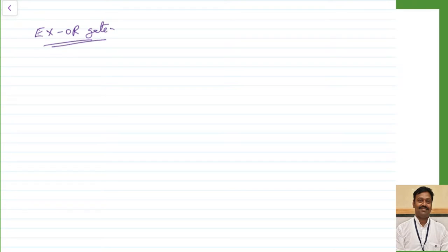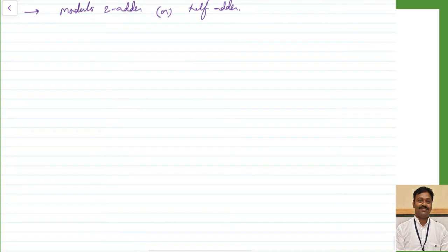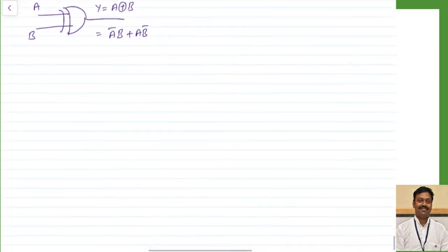This is also called as exclusive OR gate, or simply written as XOR gate. It is sometimes called as modulo-2 adder or half adder, because it adds two numbers in the modulo-2 form. The symbol for this is a OR gate with one more curve at the beginning, with inputs A and B. The output is represented as A exclusive OR B, given by the symbol plus inside a circle, and is equal to A̅B + AB̅. That is for the case of a two-input gate.